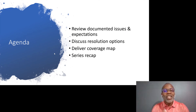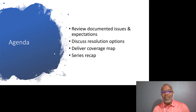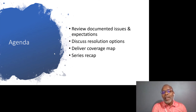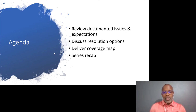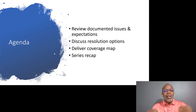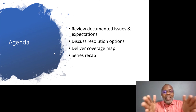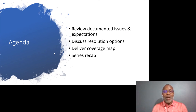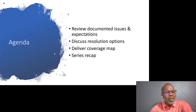From an agenda perspective, we're going to review the documented issues and expectations — some of the stuff that came forward from last week. We're also going to discuss the resolution options: we've looked at these issues, so what happens now? Then we're going to look at and actually build the coverage map — what would the ideal coverage map of my house look like? And we're going to recap the actual series.